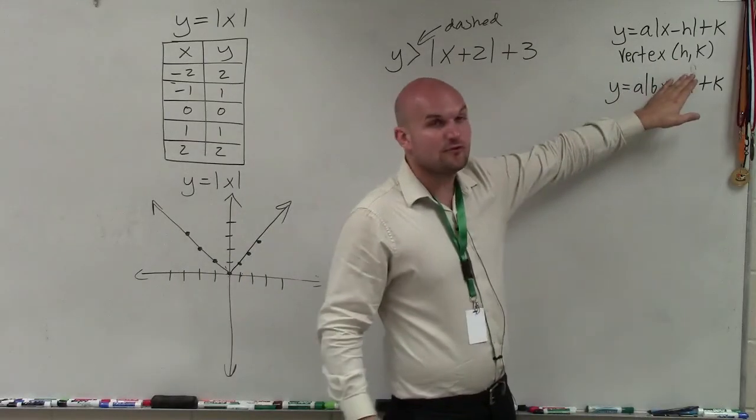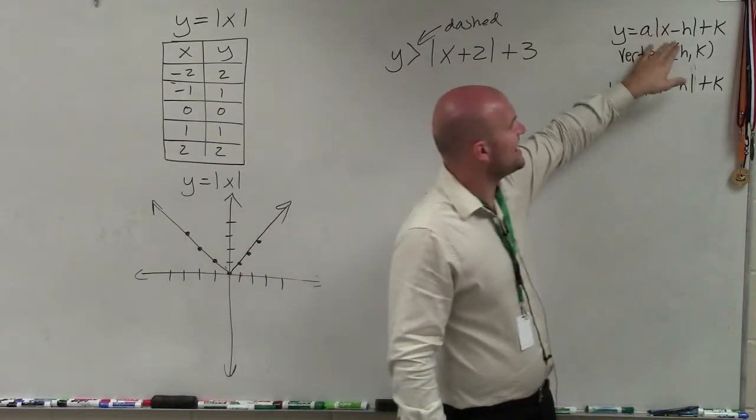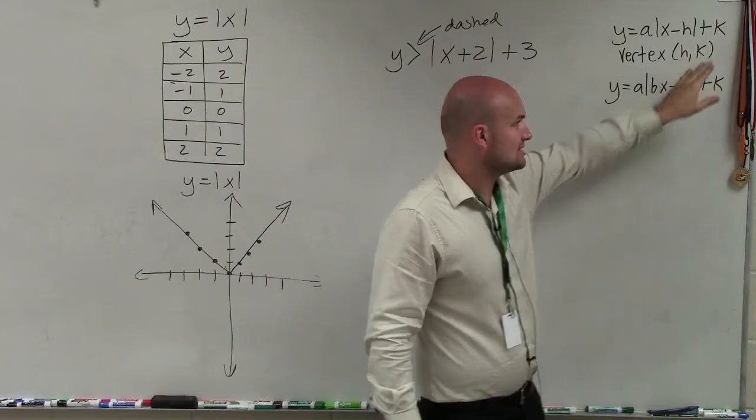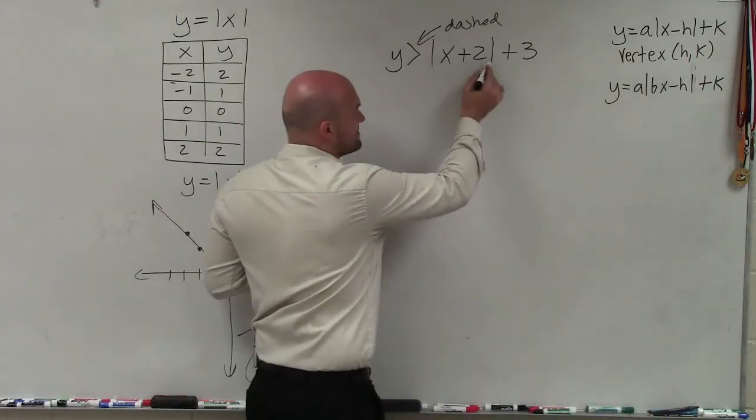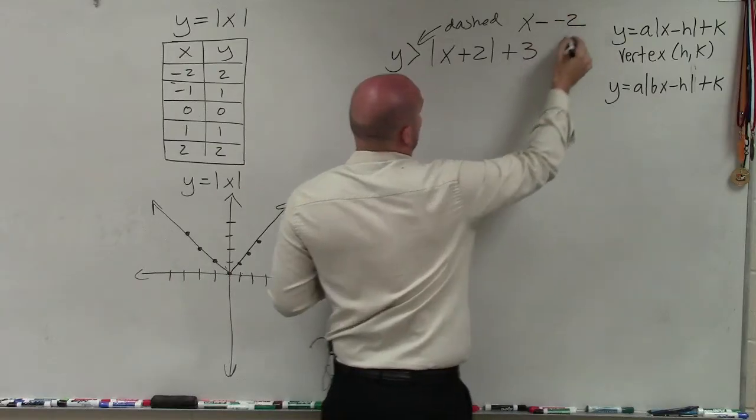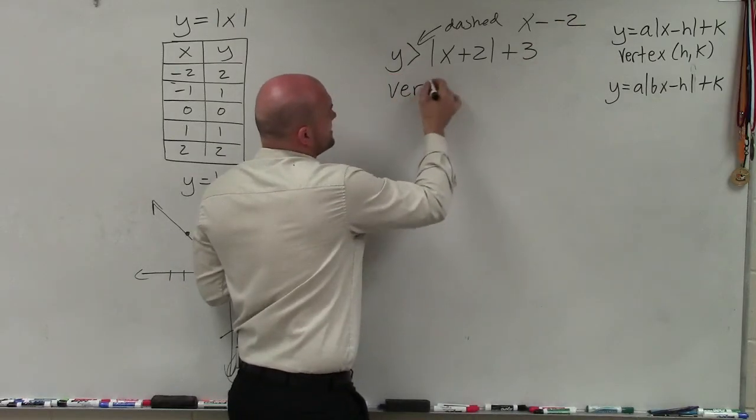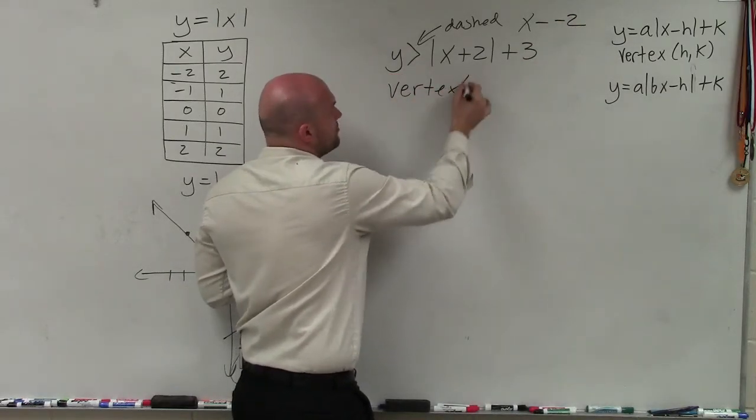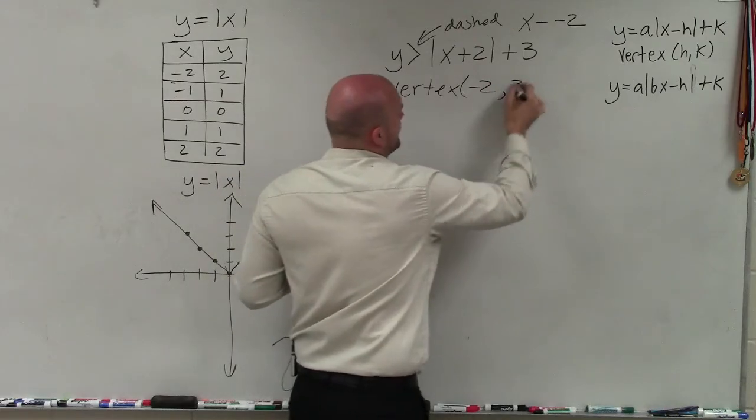Now my vertex is in the form of (h, k). Remember, the form is x opposite of h plus k. So x opposite of 2, we can rewrite x + 2 as x opposite of negative 2. That means my vertex is not 2, but it's (-2, 3).